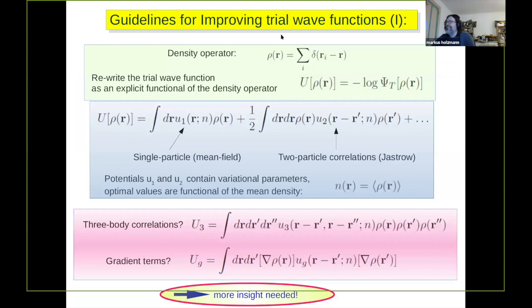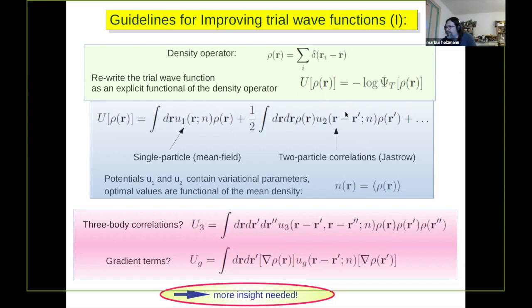What are the guidelines for the trial wave function? I can rewrite the logarithm of the wave function — which should be positive for the ground state — as a functional expression over the density operator, giving a single-particle term and then two-particle terms. The parameters are hidden in these functions and depend on density. If the density is non-uniform, there's a functional dependence on the mean density; if uniform, the mean density is constant.